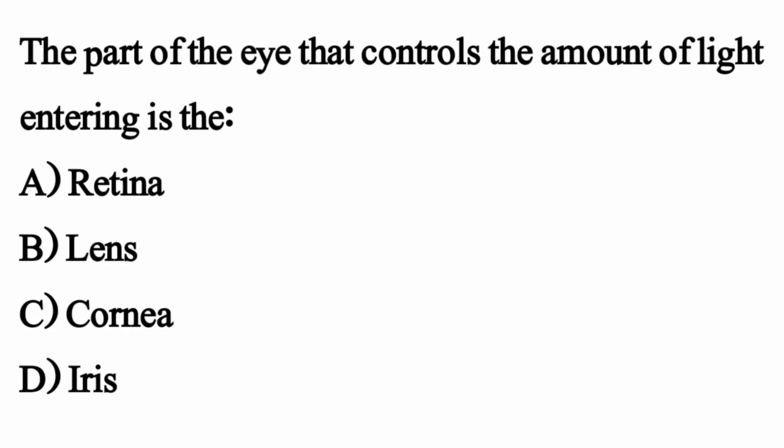The part of the eye that controls the amount of light entering is — the right option is option D: iris.